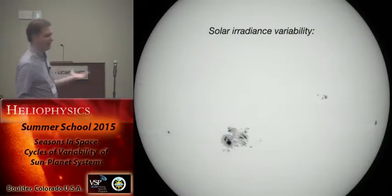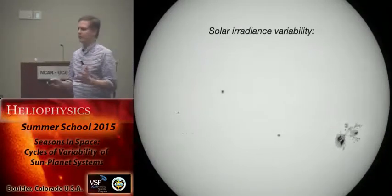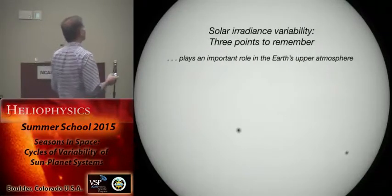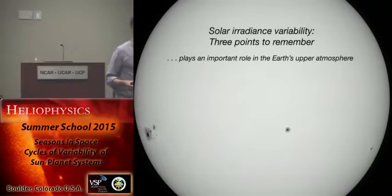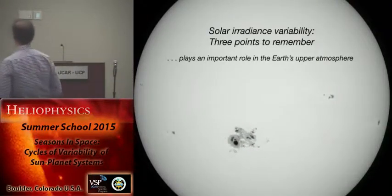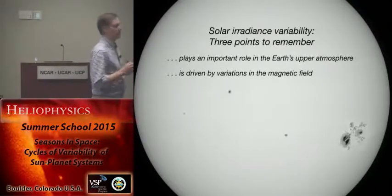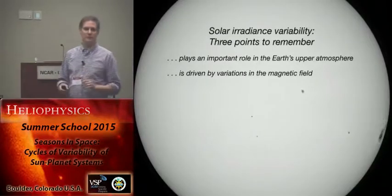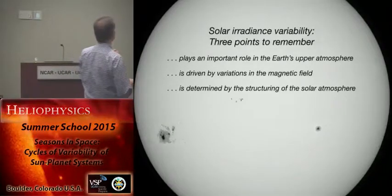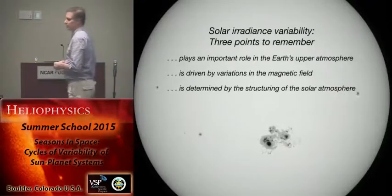I'm going to talk about the sun's radiative output, the solar irradiance, and its variability. Many years from now, there are three things I want you to remember. One is that the solar irradiance plays a central role in determining the state of the Earth's atmosphere, particularly important for the Earth's upper atmosphere. Second, that solar irradiance variability is driven almost exclusively by variations in the sun's surface magnetic fields. And finally, the details of irradiance variability are determined by the structuring of the solar atmosphere.